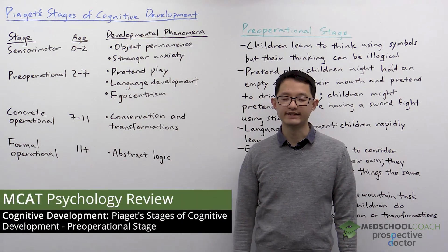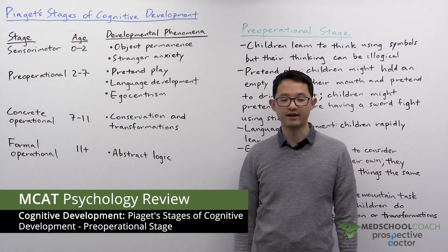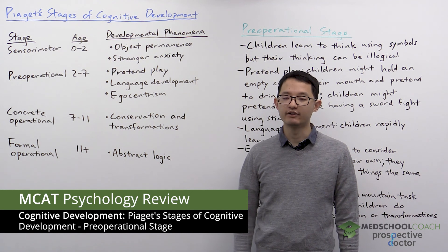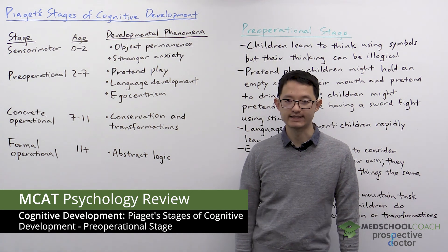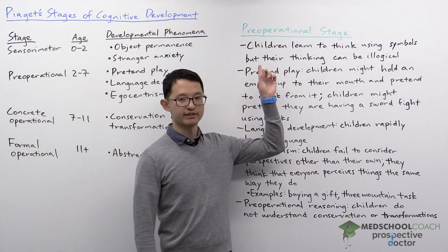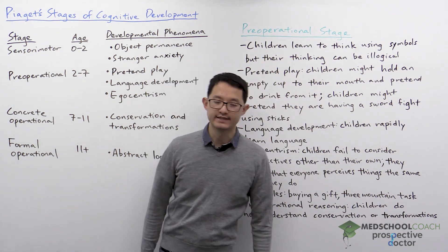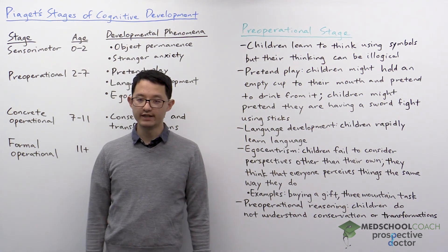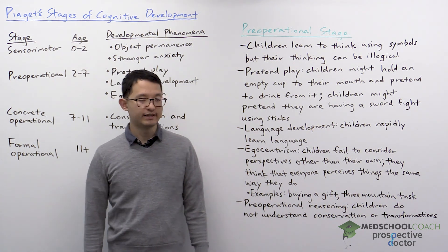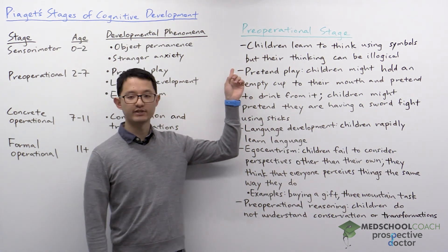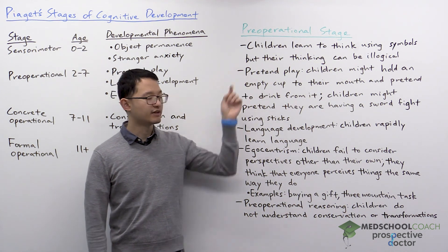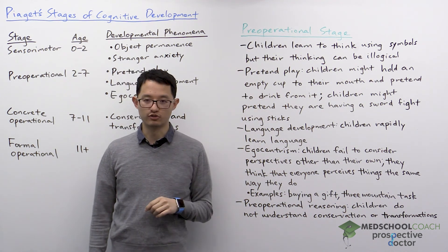In this video, we're going to continue our discussion on Piaget's stages of cognitive development by going over the second stage, the pre-operational stage. The stage is from ages two through seven. During this stage, children learn to think using symbols, but their thinking can be illogical.